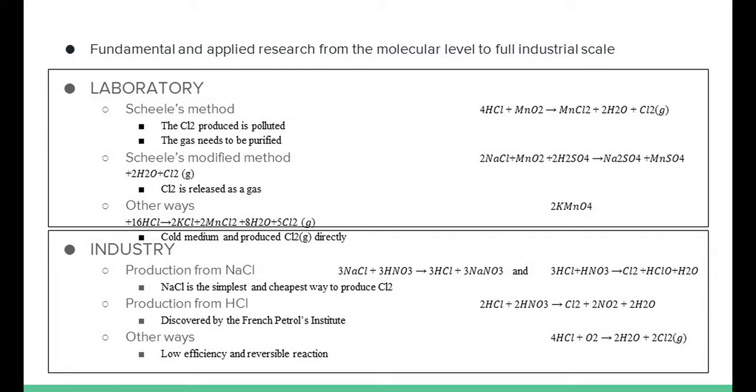Another way to produce chlorine in a laboratory involves using oxidants such as potassium permanganate. In this case, the reaction takes place in a cold medium and produces chlorine directly as a gas. We can find three main forms of producing chlorine when we talk about an industrial scale. The most important one, which occupies 95% of the production, is the chloralkali process.